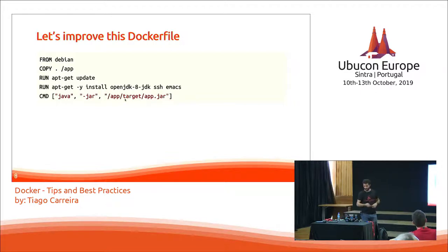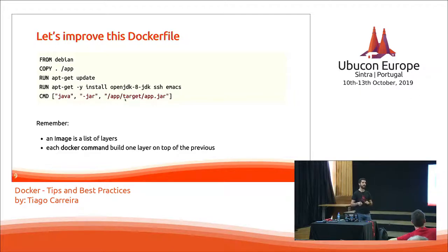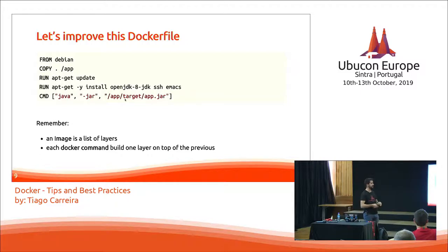Here we have some Dockerfile commands: FROM, COPY, RUN, and CMD. CMD is a special command — it doesn't run at build time. COPY copies the files, and RUN executes that command on the Linux inside the container. Remember, the image is a list of layers. Each Docker command builds one layer on top of the previous one. The FROM Debian is a layer, also an image, from the Docker Hub repository official Debian image. Then we build another layer with the files we copy, and then apt-get update is another layer on top, and so on.